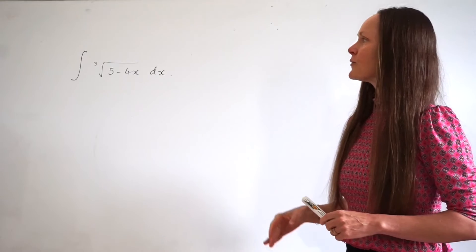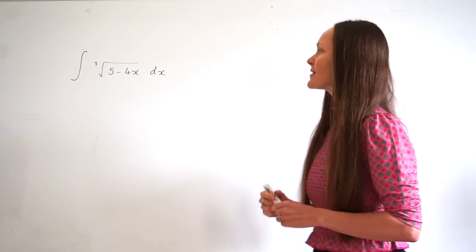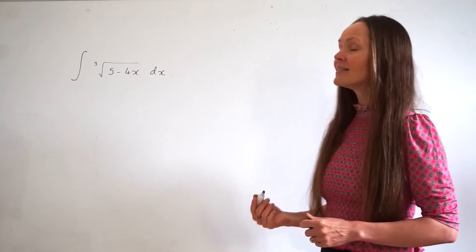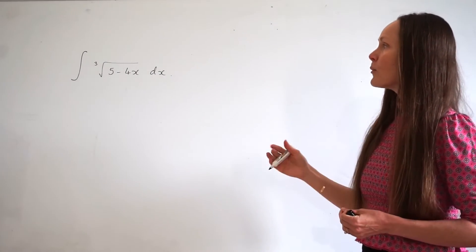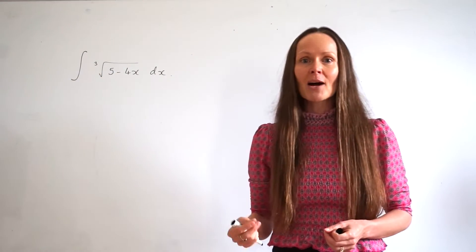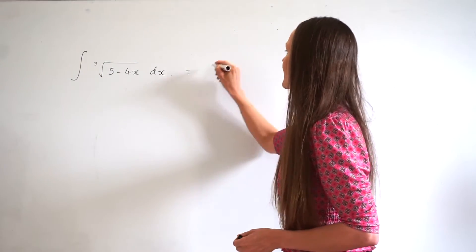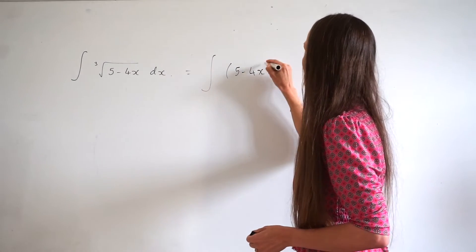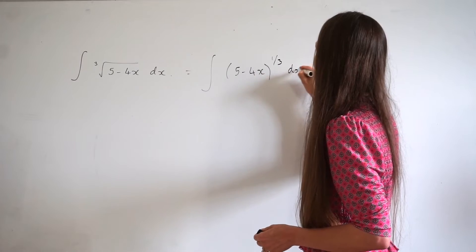In this question we have to find the integral of the cube root of (5 minus 4x) with respect to x. Before we integrate, it's a good idea to rewrite the question in power form. Remember, cube rooting is the same as raising to the power of a third, so we're finding the integral of (5 minus 4x) raised to the power of a third with respect to x.